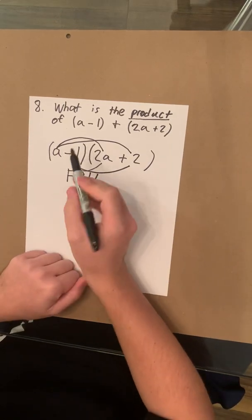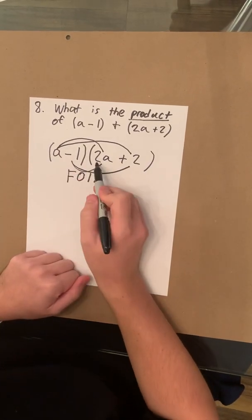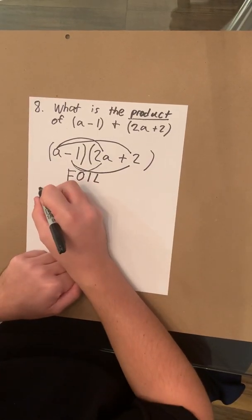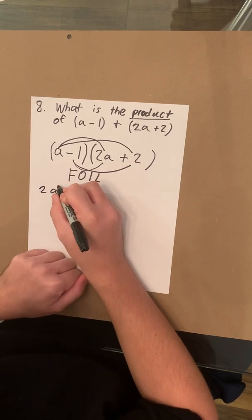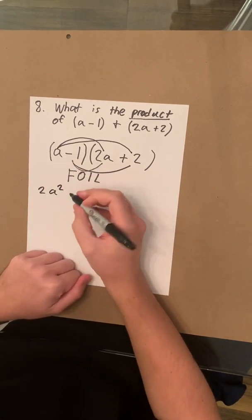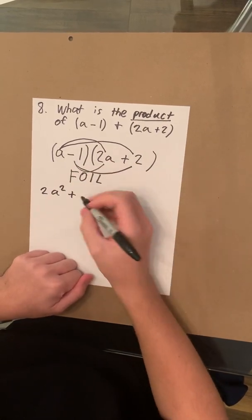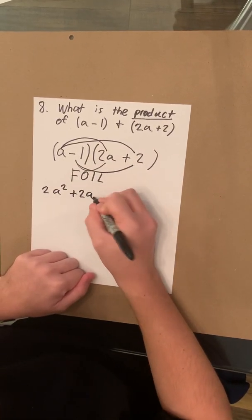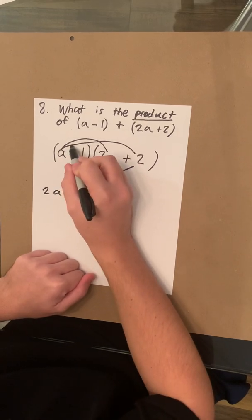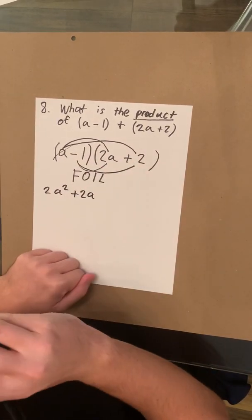So let's work this out. So we have a times 2a. That's going to be 2a squared. Plus a times 2. So that's 2a. Now, I like to cancel numbers out when I'm done using them because that way I don't get confused.